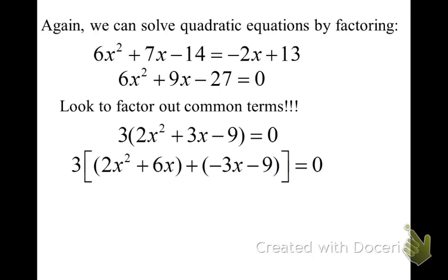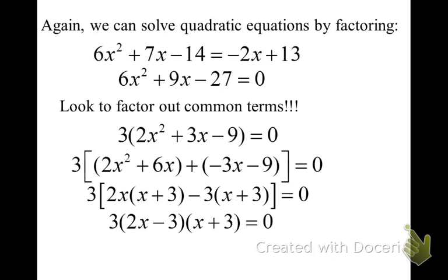So we're going to rewrite the problem with our four terms, and then we're going to factor out the 2x in the first parentheses, and we're going to factor out the negative 3 in the second parentheses, and then we're going to factor again. Factor out the common factor x plus 3, and that'll leave us a 2x minus 3 in the brackets. So our factors are 3, and 2x minus 3, and x plus 3.